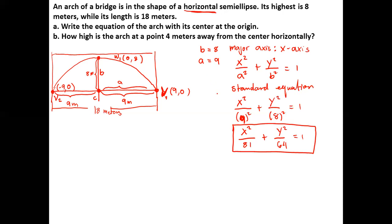For the second question, letter B: how high is the arc at the point 4 meters away from the center horizontally? So 4 meters away from the center — we need to find the height at that point.